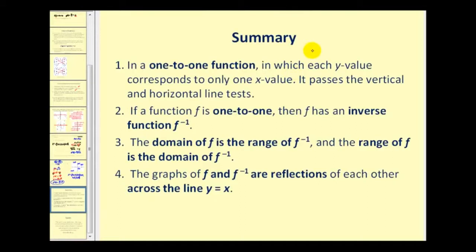Let's summarize. In a one-to-one function, each y value corresponds to only one x value, and it passes both the vertical and horizontal line tests. If a function f is one-to-one, then it has an inverse function. The domain of f is the range of f inverse, and the range of f is the domain of f inverse — because we're interchanging the x and y variables. Lastly, the graphs of f and f inverse are reflections of each other across the line y equals x.